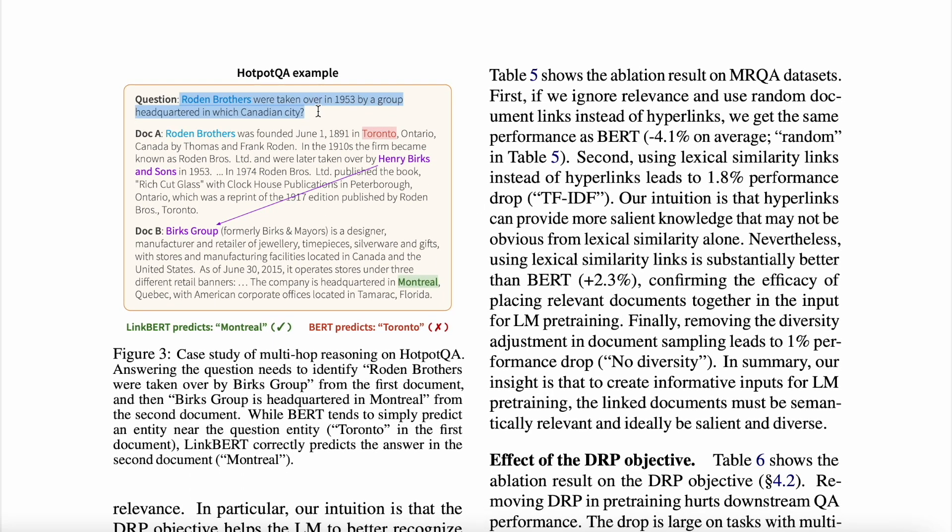And also, if you see an example of multi-hop question answering, if this was the question that we had and this was Document A that was given to the BERT model, then BERT would have predicted Toronto for this question that says 'Rodden Brothers were taken over in 1953 by a group headquartered in which Canadian city?' But Toronto is an answer for where this was found, rather than the company that took it over in 1953. But in the same document you have a sentence that says it was taken over by this in 1953, but we want what is the location for this. So we go to Document B, which is a hyperlink to this, and here we get Montreal as an answer. So LinkBERT gets you this answer, which is Montreal, whereas BERT just predicts Toronto based on the context that it has and the lack of relation that LinkBERT uses to expand its knowledge. So this is the power that we're talking about.